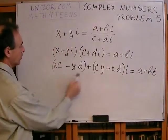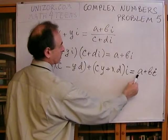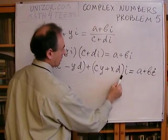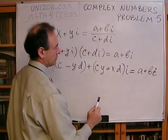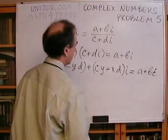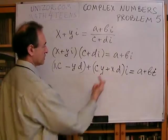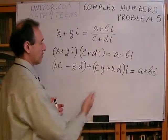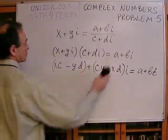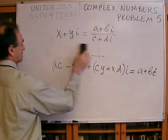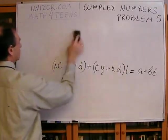Okay, so we have a real number should be equal to a real number. And this real number, the coefficient with I, should be equal to B. So, basically, we have a system of two linear equations with two different unknown variables, X and Y. So, let's just write it down as such, and we will see what happens.